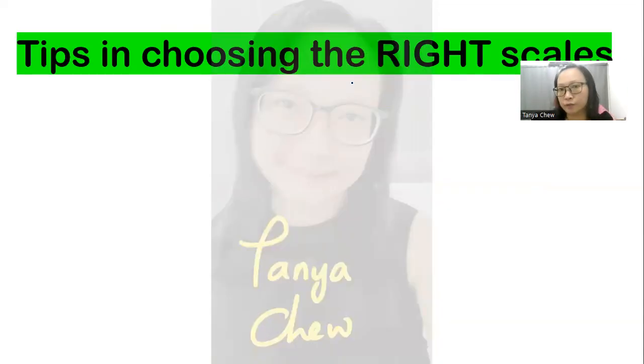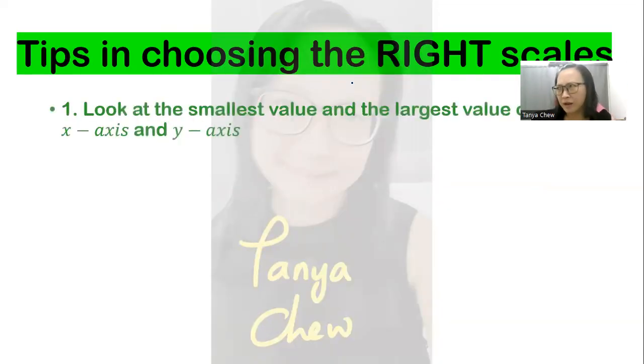Tips in choosing the right scales. What do I mean by right skill and wrong skill? Choosing the accurate scale is what I meant. First of all, you have to look at the smallest value and the largest value on your x-axis and your y-axis. That is the first thing that you need to do.